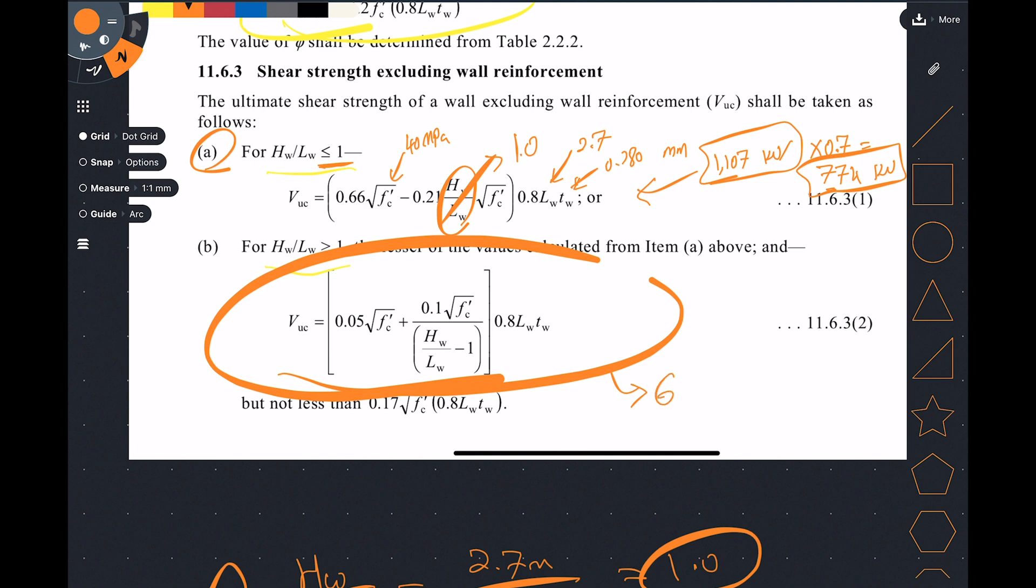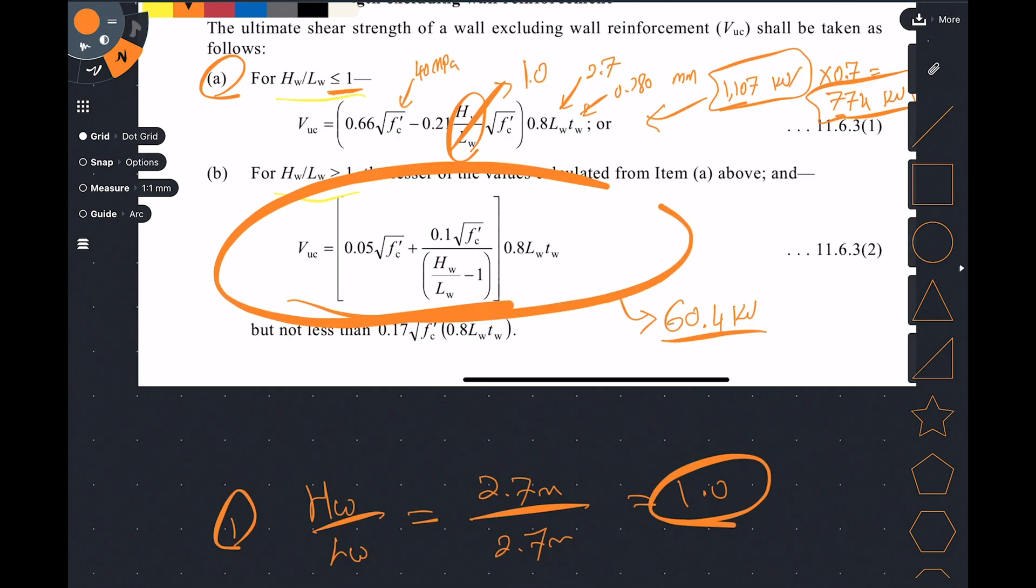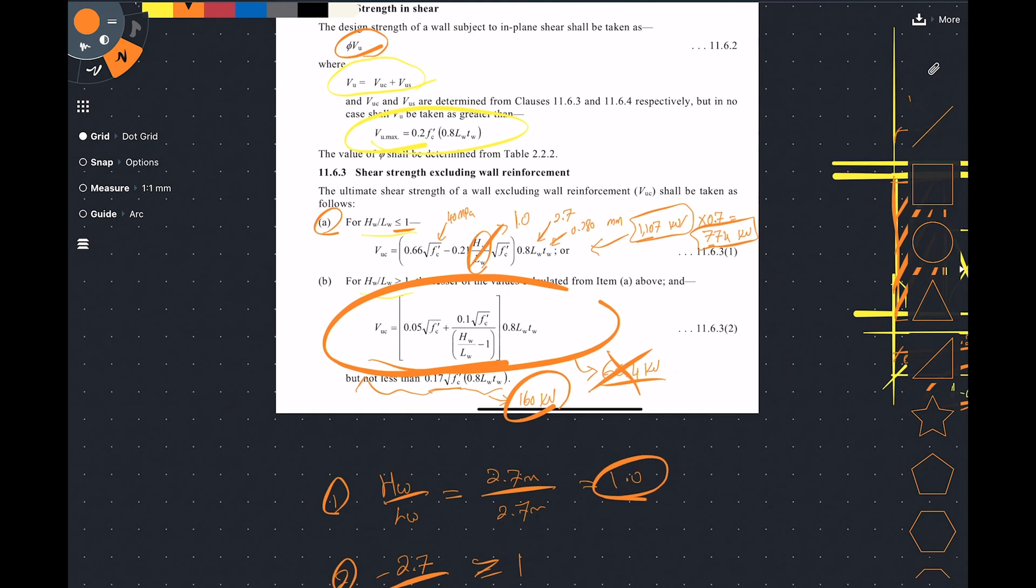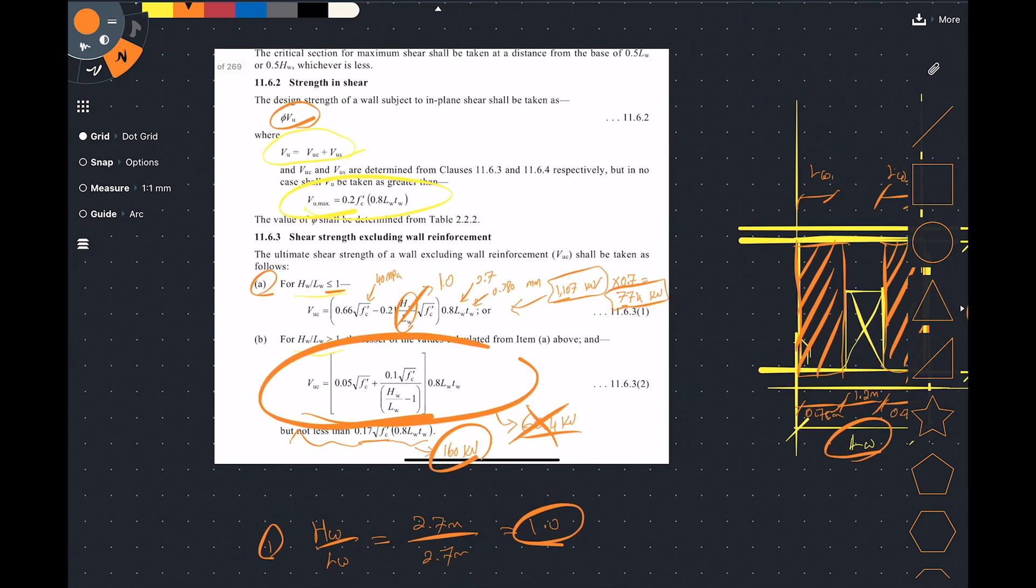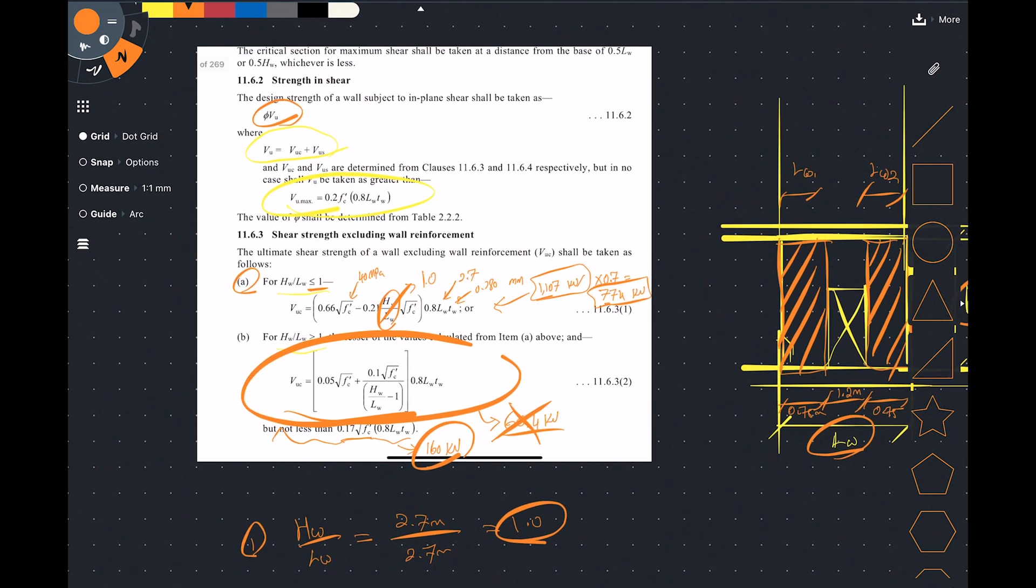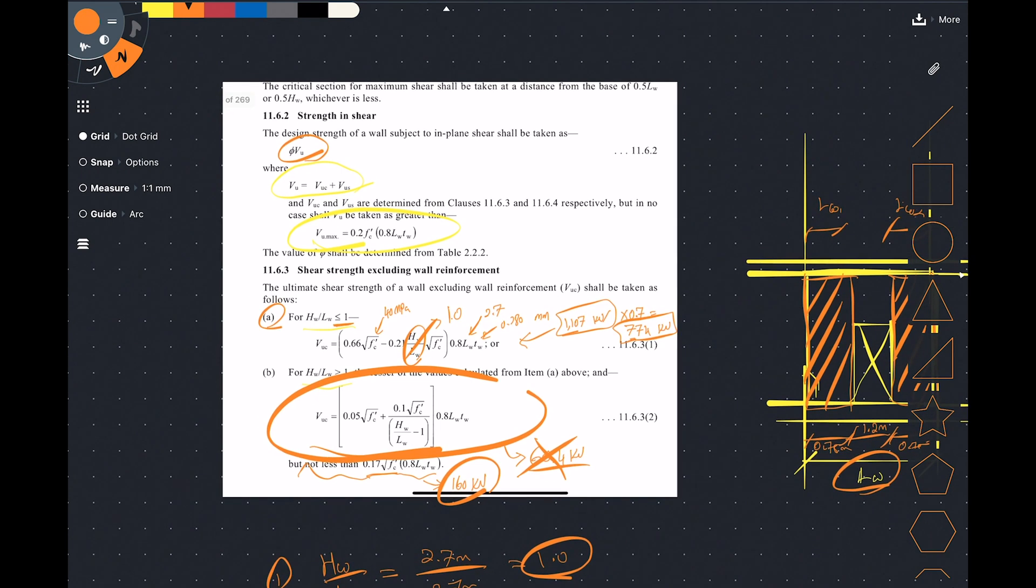With using this equation again it's very simple substitution of the values, you should be getting something around 60.4 kilonewton. Again that is a very small value so let's check how much is the minimum over here. That minimum is 160 kilonewton which means I'm gonna have to use this 160 because it cannot be any less than this value anyway. Now we've got our concrete shear capacity and in this case with the opening it's actually only having 160 kilonewton.